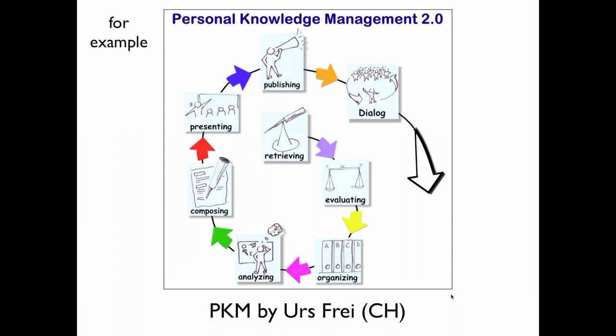Orse Frye, who was in a previous PKM workshop and on an informal learning online workshop Jay Cross and I ran six years ago, came up with his own model: a continuing spiral where first you retrieve, then evaluate, organize, analyze, compose, present, publish, engage in dialogue, and continue around. For Orse in Switzerland, that made a lot of sense. I have a collection of several of these from different people. Seek, Sense, Share is a good starting point, but it's not one you have to use. Use what works; discard what doesn't.